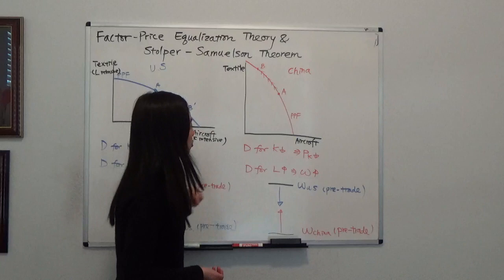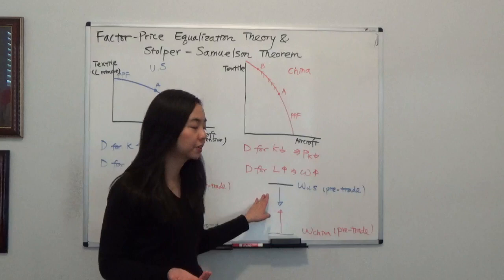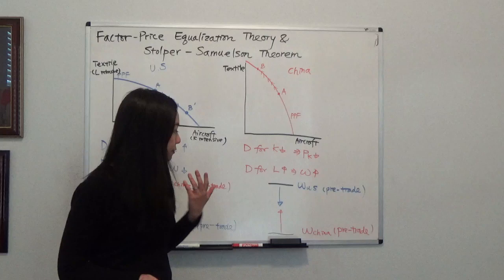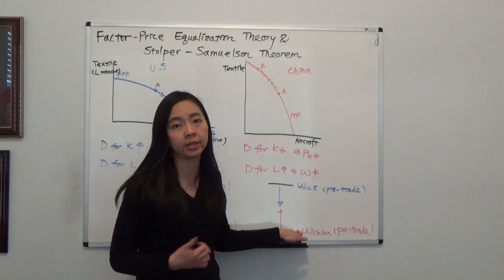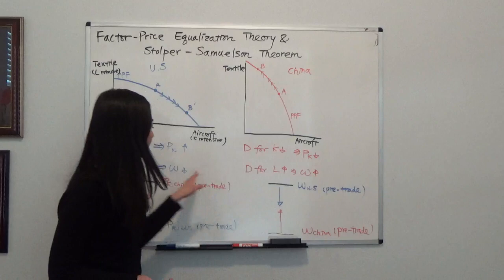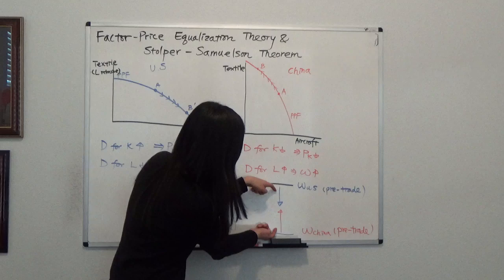For wages, we know that before trade, because the U.S. is relatively capital abundant, the wage for laborers was higher. And for China, because they are relatively labor abundant, the wage in China before trade was lower. After trade, because the wage in the U.S. goes down and the wage in China goes up, therefore eventually the wage will equalize.